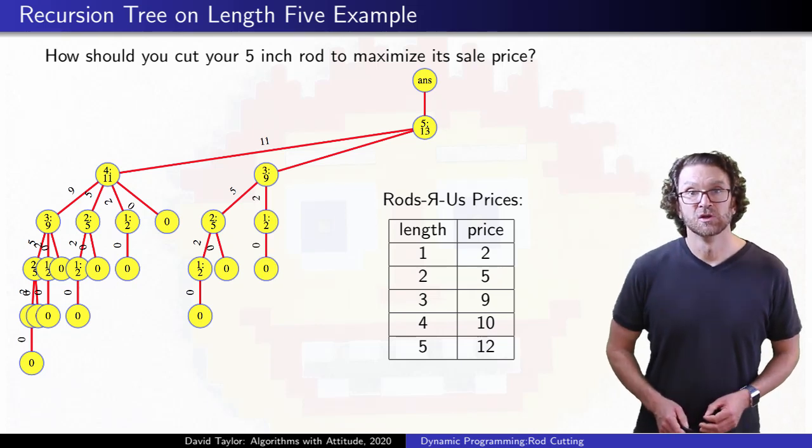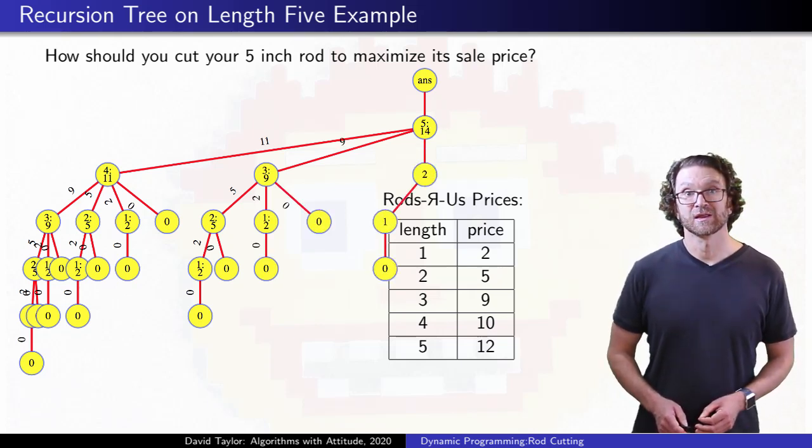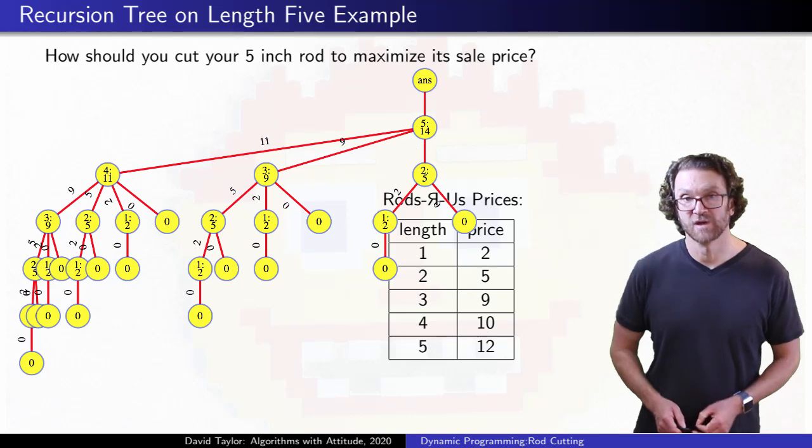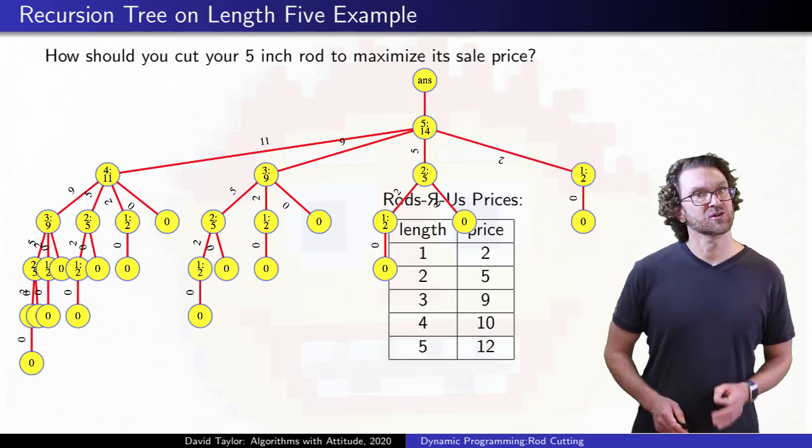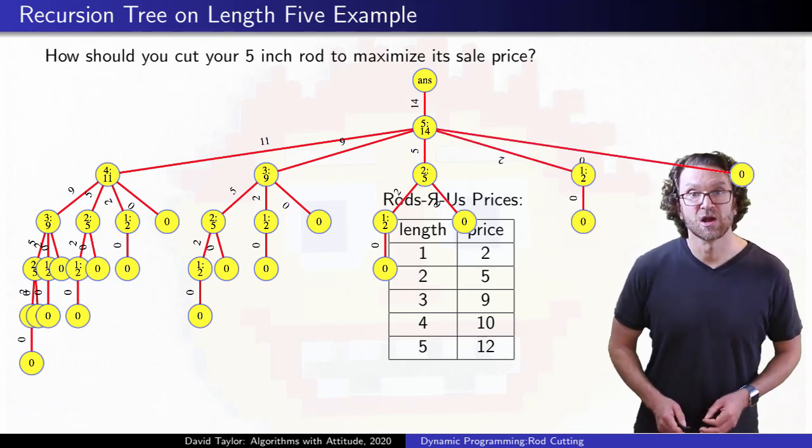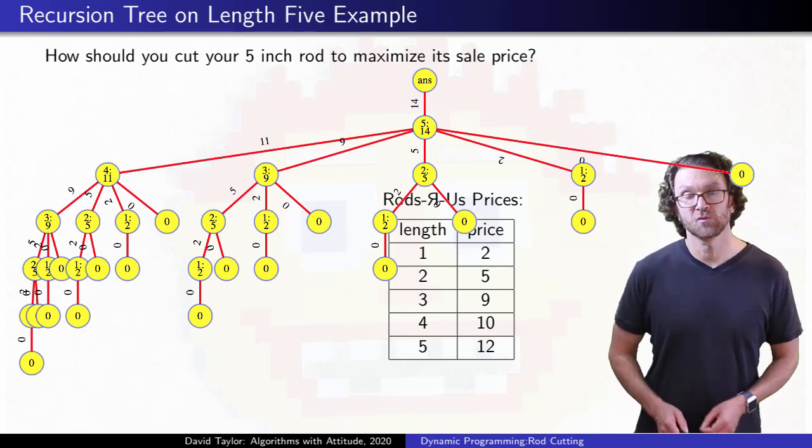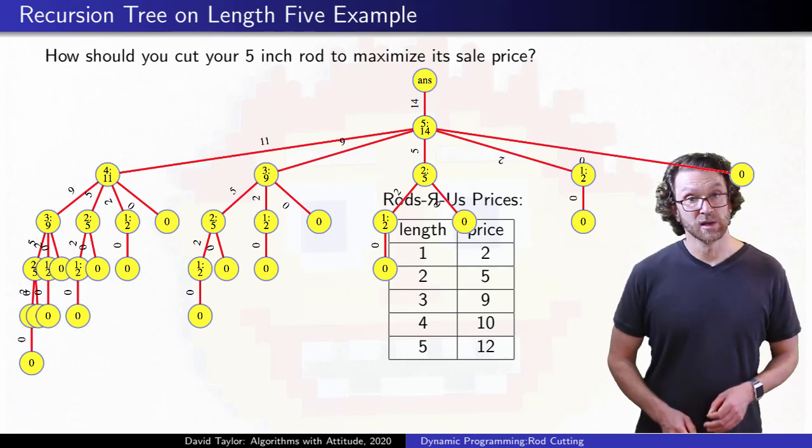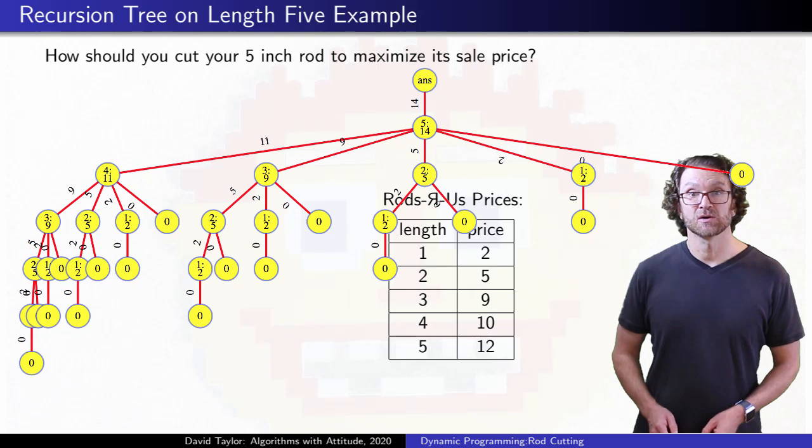I put the final value on the edge leading from that recursive call. Even in this small example, you can see that we solve the length 2 rod 4 times. We hit that 0 leaf 16 times, once for each possible way of cutting the rod.